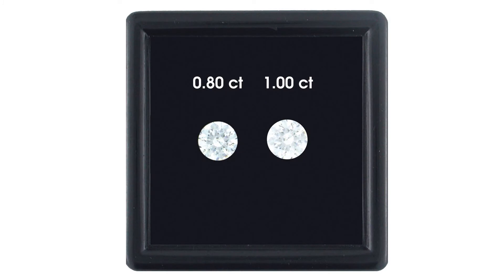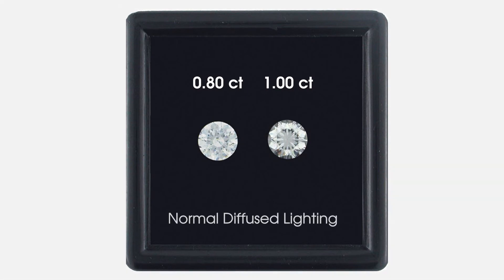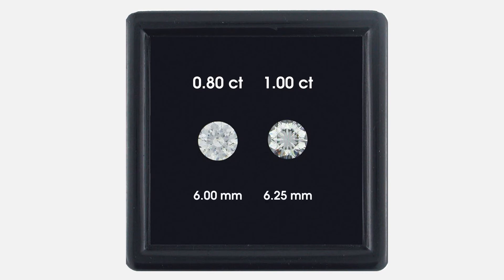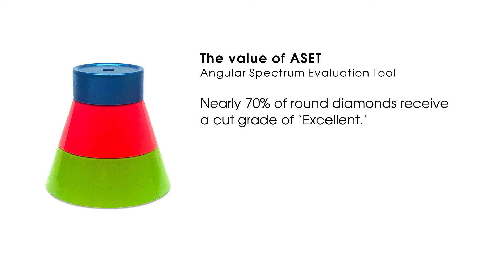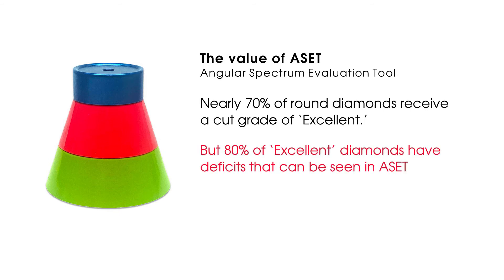But now let's see them in normal lighting. Here the deficits you can clearly see in Asset become apparent. The one carat stone loses brightness at the edges and now it appears visually smaller than the 80 pointer, even though it's physically larger. Here's why this matters to diamond shoppers: nearly 70% of all round diamonds receive a top cut grade of excellent, but 80% of excellent diamonds have performance deficits that can be seen in Asset.